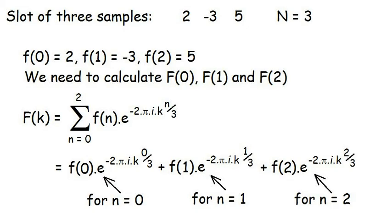More practically, here's a mathematical example of how we can calculate the DFT for a very small time slot. To keep things simple, the slot only has three samples in it. Two, minus three, and five. Which become the values of small f0, small f1, and small f2.